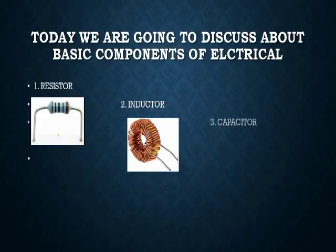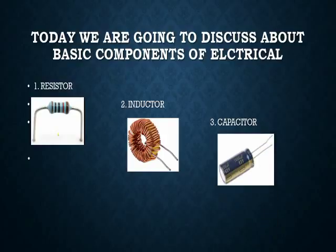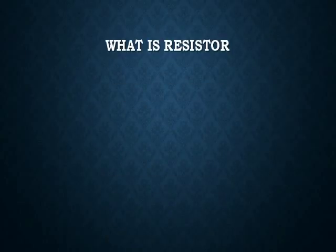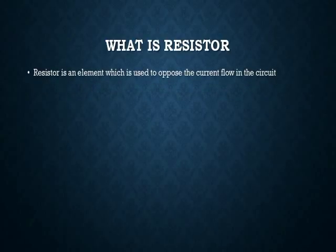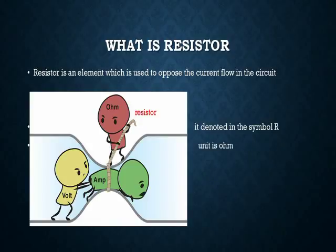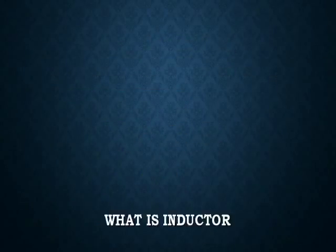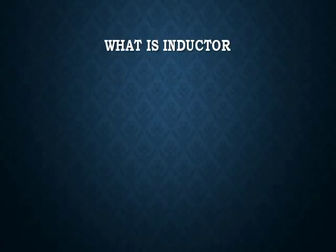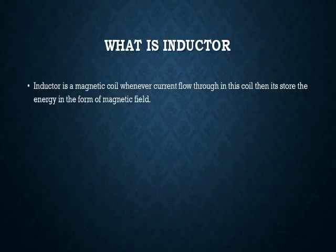First, what is a resistor? A resistor is an element which is used to oppose the current flow in the circuit. As you can see in the drawing, the voltage tries to push the current in the circuit, but the resistor blocks the current. This is the function of the resistor. It is denoted by the symbol R and its unit is ohm.